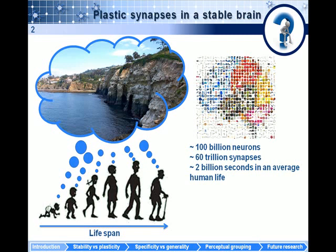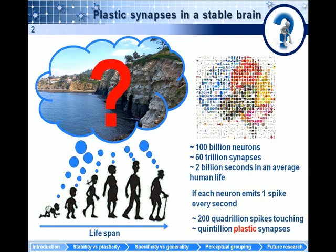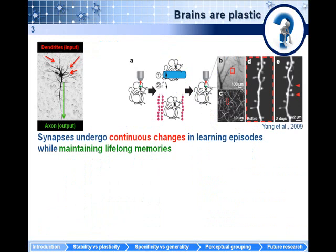If you consider an average lifespan of about 2 billion seconds, and assume with a very conservative estimate that each neuron in the brain emits about a spike every second, we are facing about 200 quadrillion spikes which attach and potentially modify in a plastic way about a quintillion plastic synapses. So the question of spontaneity arises on how our memory is preserved despite all this processing going on.